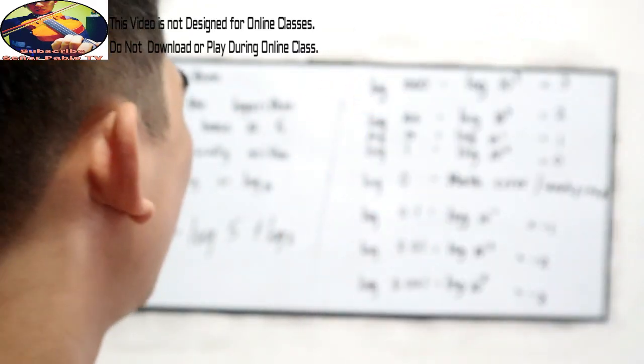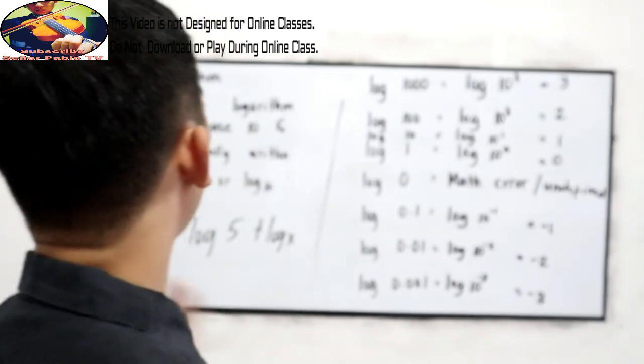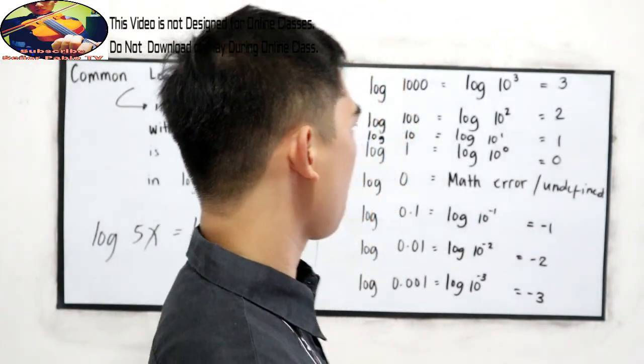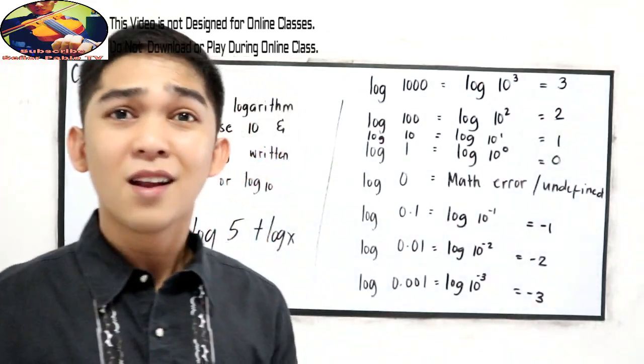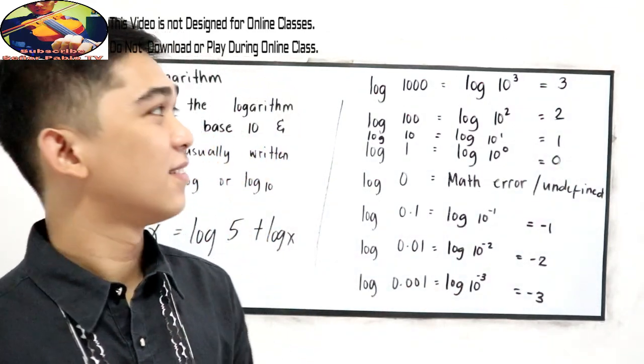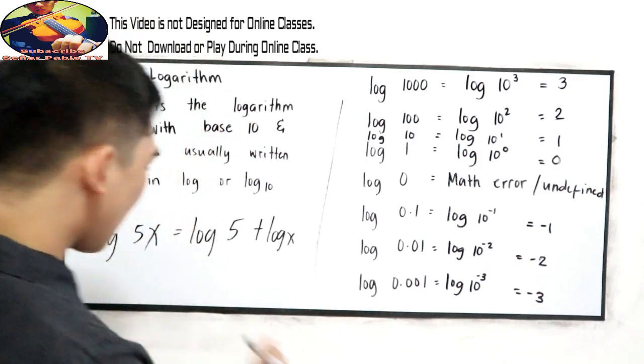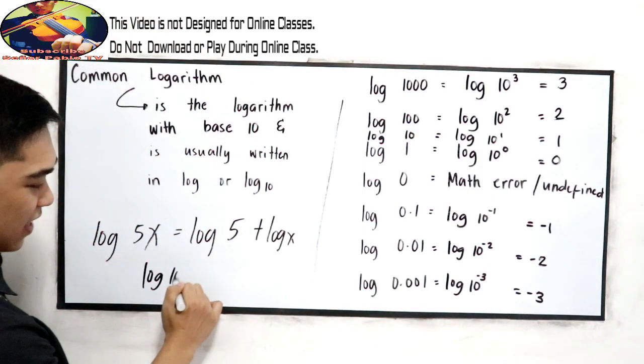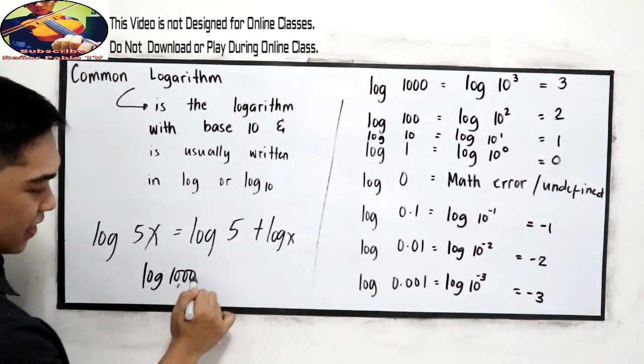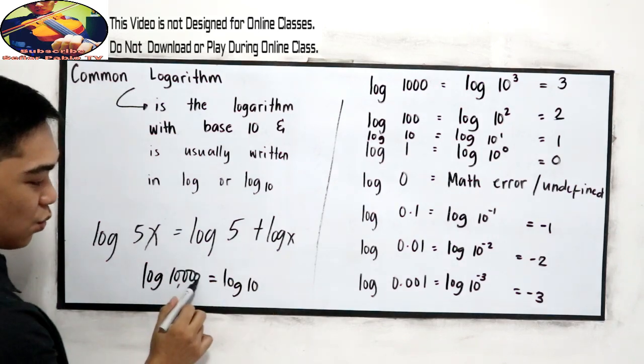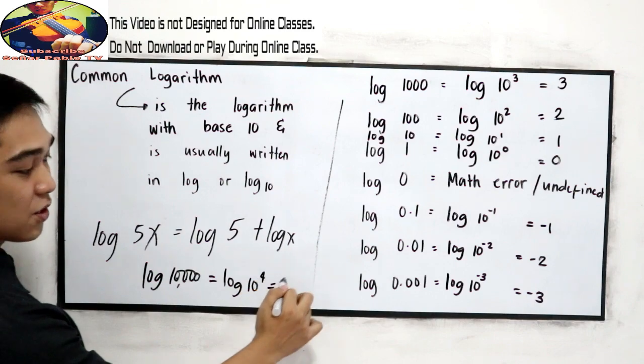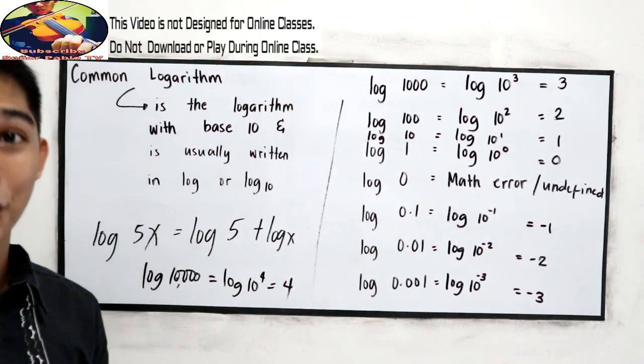So this is our common logarithm. If your teacher will ask you, what is log 10,000? Log 10,000, that is equal to log 10 raised to 1, 2, 3, 4. So that is equal to 4.